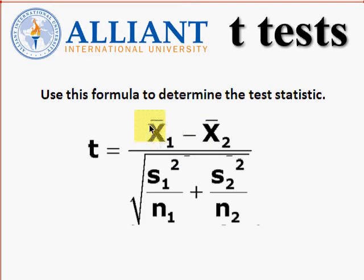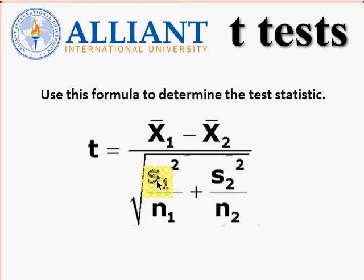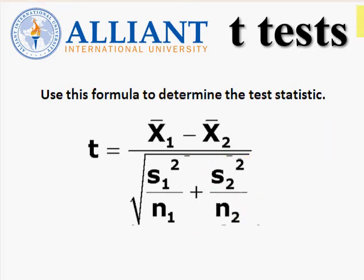X sub one is the mean of the first group. X sub two is the mean of the second group. S sub one is the standard deviation squared. N sub one is the sample size for the first group. And this information over here is the information from the second group.